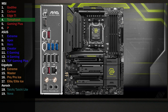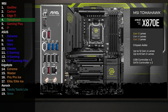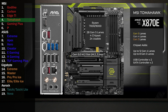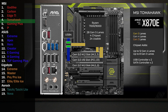Here's the MSI X870E Tomahawk. The first four lanes go to the main M.2. Sixteen lanes go to the main x16 slot for the graphics card. These lanes are direct to the CPU and are not shared with any other slots. Four lanes at Gen 5 connect to a PCIe switch, connecting USB 4 and an M.2 slot. In the default mode, all four lanes go to USB 4. If the M.2 slot is used, USB 4 drops to two lanes and two lanes go to the M.2.